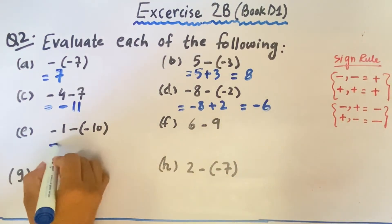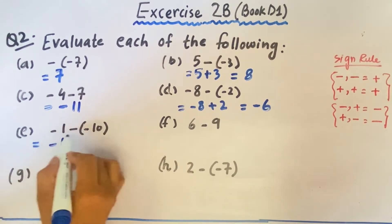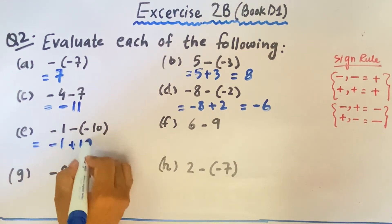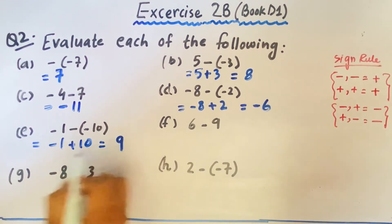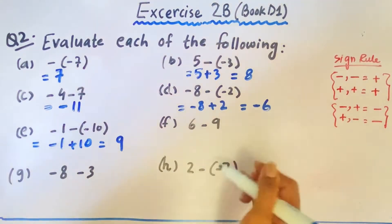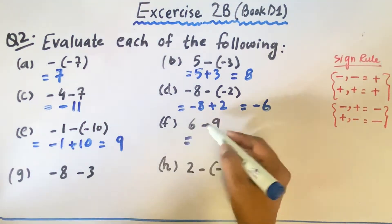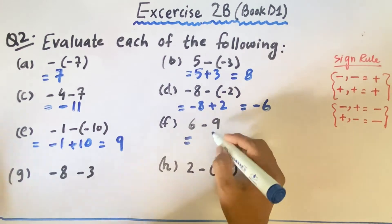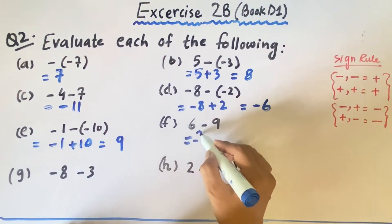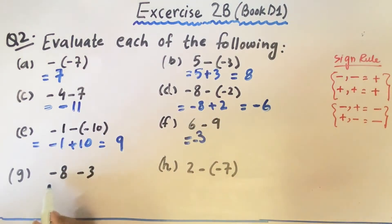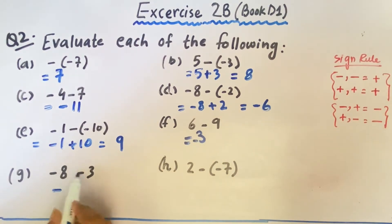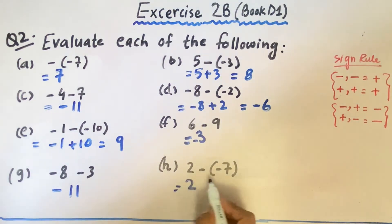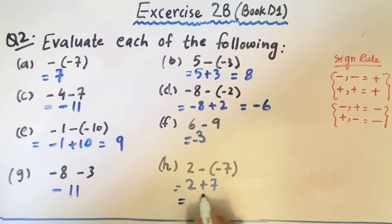Minus, minus, and 1 will remain the same. Minus minus equals plus 10, and then we have 9. The plus sign applies because the bigger number is 10, and plus minus minus gives minus 3. In the next part, minus, minus equals plus — sign will be minus — and the answer will be 11. And there will be two steps: minus, minus equals plus 7, and the final answer will be 9.